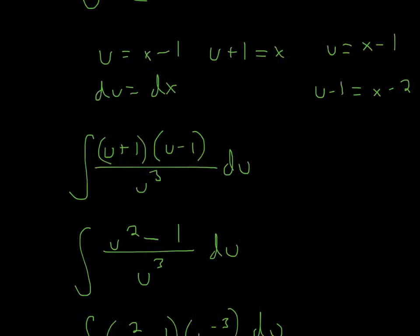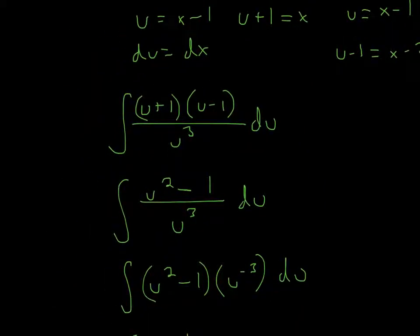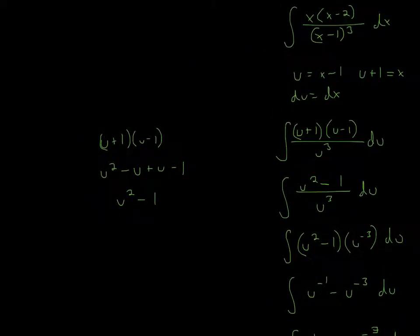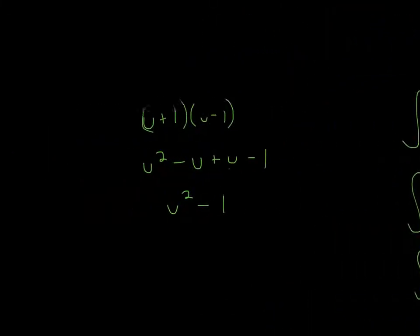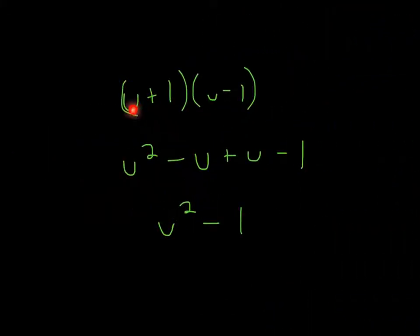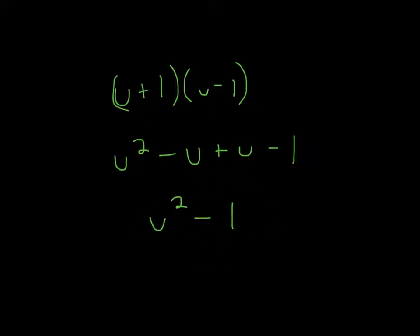Now since we have all u's, we can expand this. All we do is some simple FOIL. u times u is u squared, u times negative 1 is negative u, 1 times u is u, and 1 times negative 1 is negative 1. The negative u and u cancel, so you get u squared minus 1.